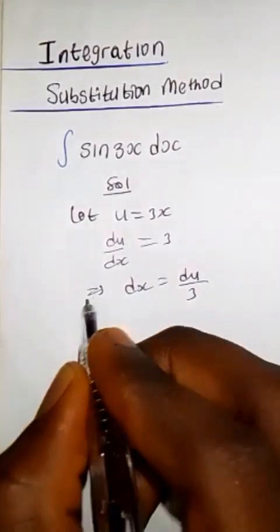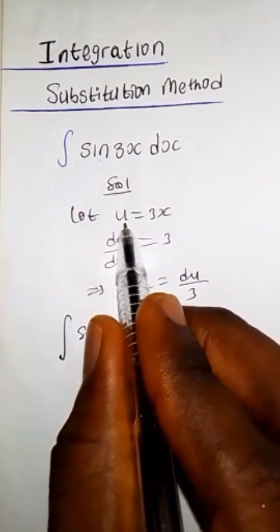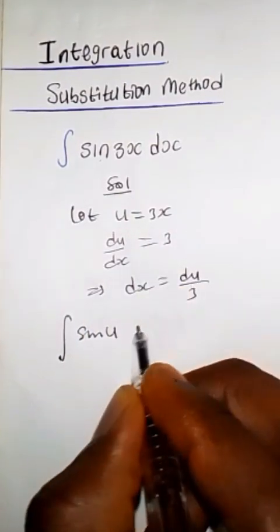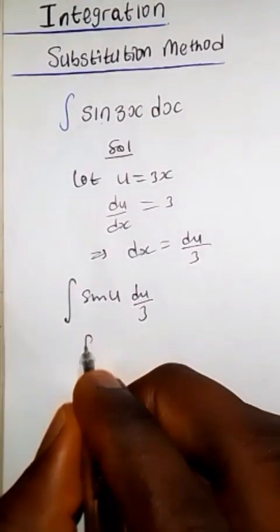Now back to our integration. Since we let u equal 3x, we have sin(u) and dx equals du over 3, in which we can now have the integral of (1/3)sin(u)du.